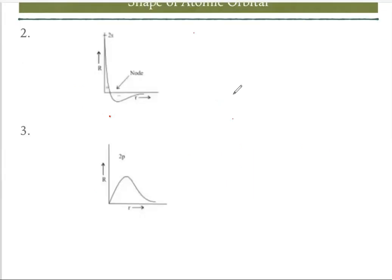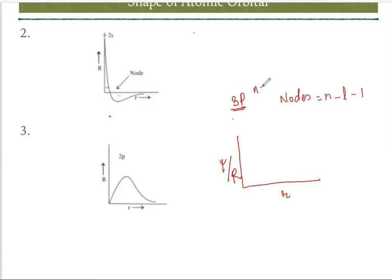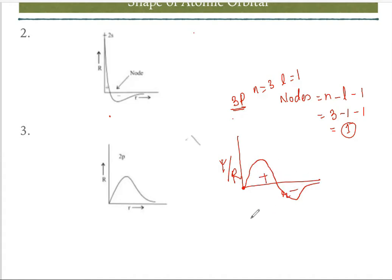Now let's draw the graph of 3p. For 3p, the number of nodes is n − l − 1 = 3 − 1 − 1 = 1 node. Since it is a p orbital, it starts from the origin, goes up, and has to cut the x-axis once due to one node. It comes down and meets at infinity, giving one positive loop and one negative loop.